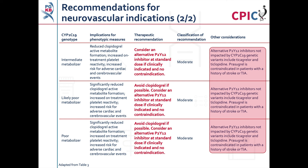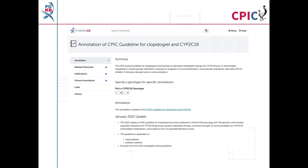Alternative platelet inhibitors not impacted by CYP2C19 variation include ticagrelor and ticlopidine. Prasugrel is contraindicated in patients with a history of stroke or transient ischemic attack. This guideline has been annotated on the PharmGKB website.